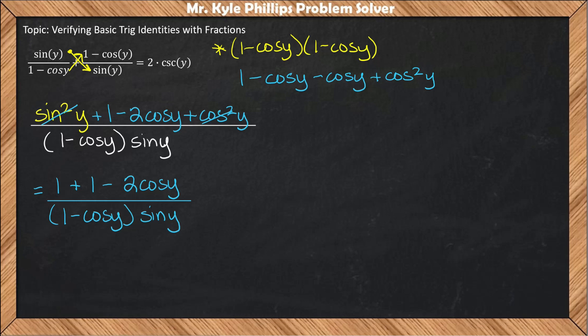Continuing to simplify our numerator, we need to combine like terms. So 1 plus 1 is 2, giving me 2 minus 2 cosine y, all over our denominator of 1 minus cosine y times sine y.